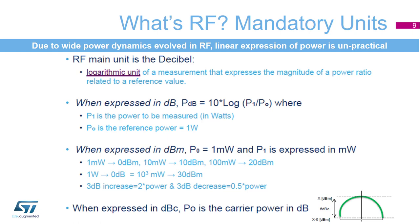Here are several conversions: 1 mW is 0 dBm; 10 mW is 10 dBm; 100 mW is 20 dBm; 1 W is 0 dB and is 30 dBm. When the power level is expressed in dBc, then P0 is the carrier power in dB.